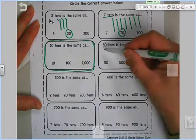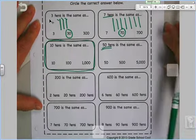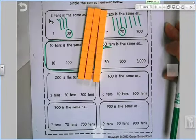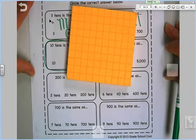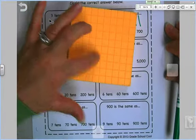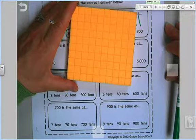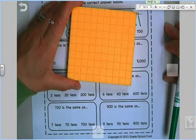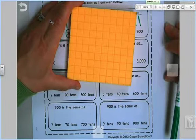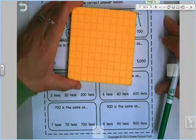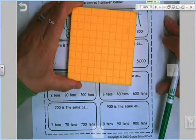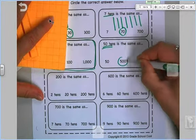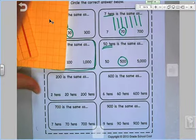Now this one gets tricky because we are not going to draw 50 tens. That would take forever. But we know that 10 of these fills a hundred. So if 10 of them fills 100, 20 of them would fill 200. You got it? 30 of them would fill 300. 40 of them would fill 400. And 50 of them would fill 500. That's a lot.